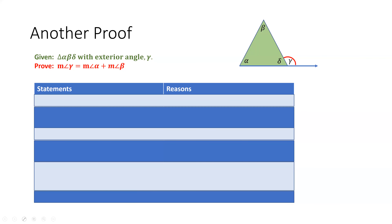Let's start out by looking at what we've been given. We're given triangle alpha, beta, delta with an exterior angle of gamma. If you look right here in the diagram, I have triangle alpha, beta, delta drawn, and also notice the exterior angle gamma, which has been marked with this red arc marking.